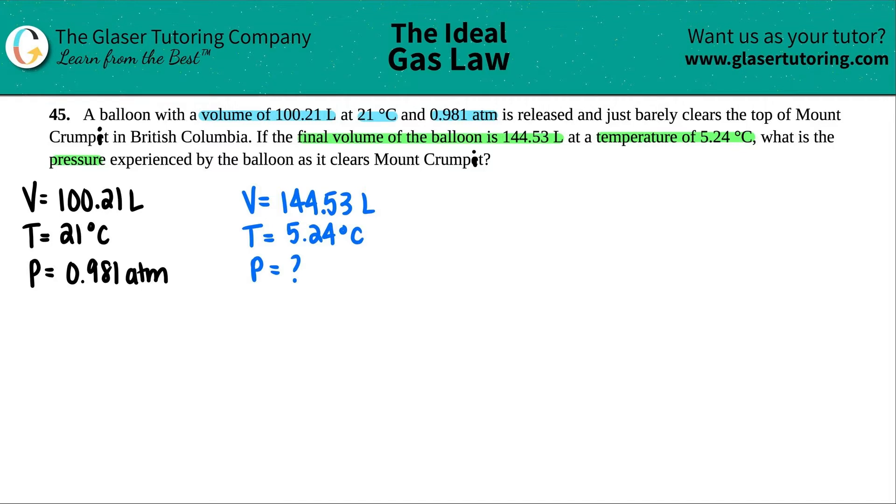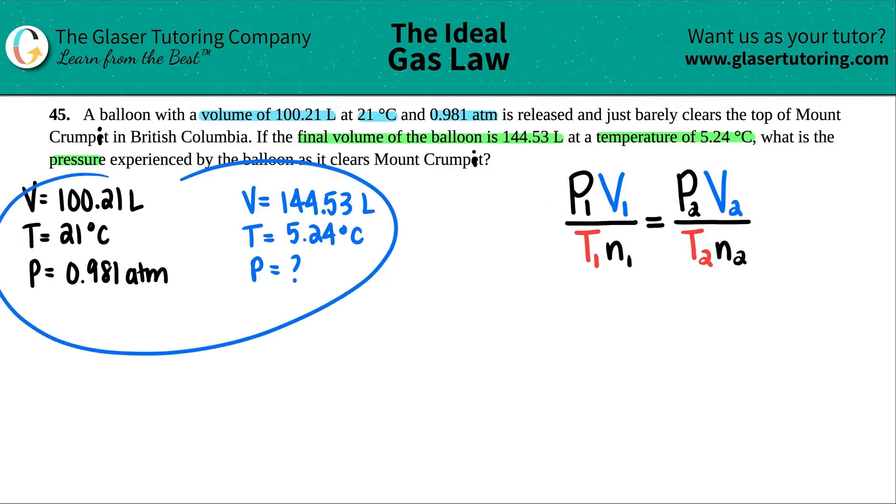In this case, we have to figure out what formula we're using, but I do see that I have sets here - I have two volumes, I have two temperatures, and I have two pressures. So usually when you see sets, you're thinking of the combined gas law, which is this one. So P1V1 over T1N1 equals P2V2 over T2N2.